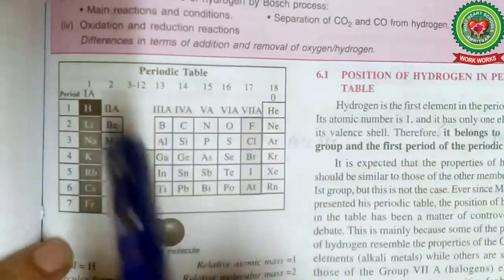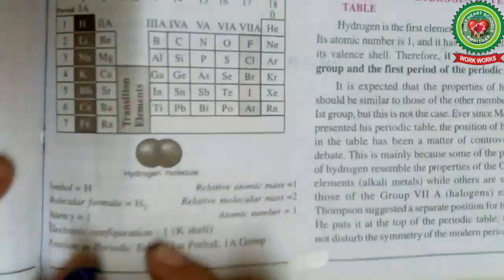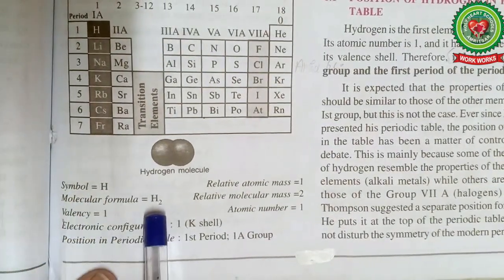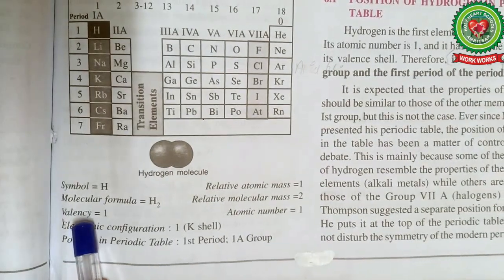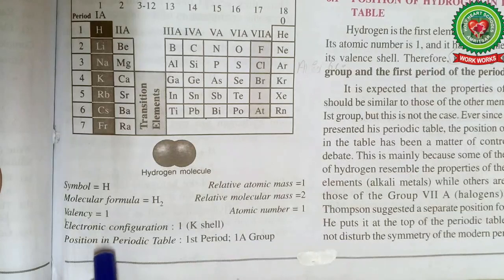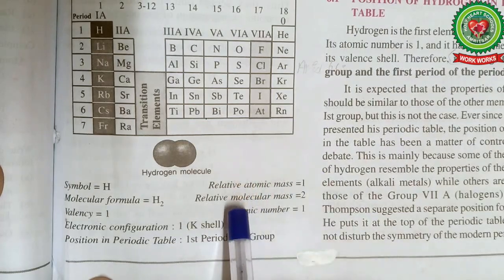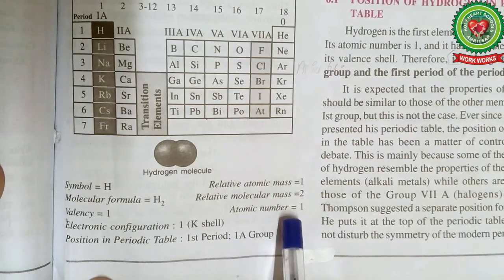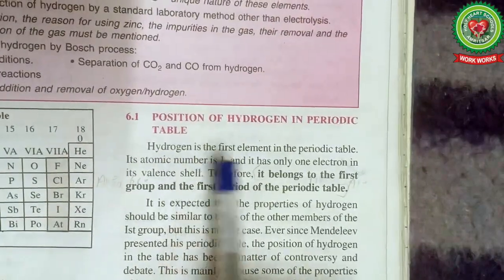Now looking at chapter six of the concise chemistry book on the study of the first element, hydrogen: the chart shows hydrogen has the symbol H, molecular formula H₂ (diatomic, meaning two atoms), valency 1, electronic configuration 1, and therefore it lies in the first period, first group (Group IA). Its relative atomic mass is 1, relative molecular mass is 2, and atomic number is 1.